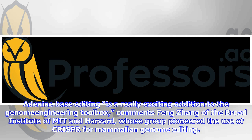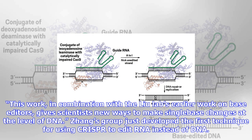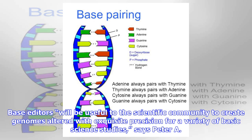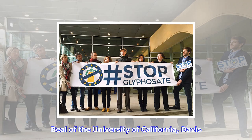Adenine base editing is a really exciting addition to the genome engineering toolbox, comments Feng Zhang of the Broad Institute of MIT and Harvard, whose group pioneered the use of CRISPR for mammalian genome editing. This work, in combination with the Liu lab's earlier work on base editors, gives scientists new ways to make single-base changes at the level of DNA. Zhang's group just developed the first technique for using CRISPR to edit RNA instead of DNA.